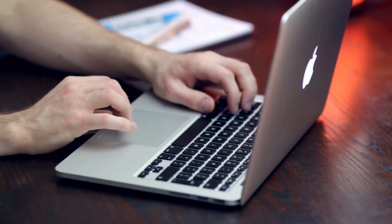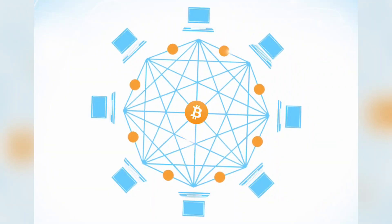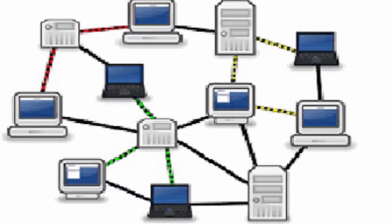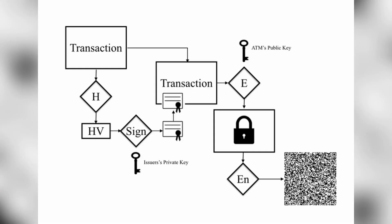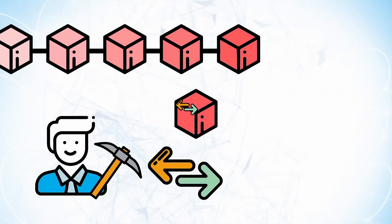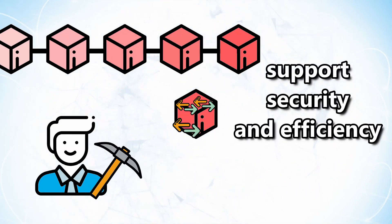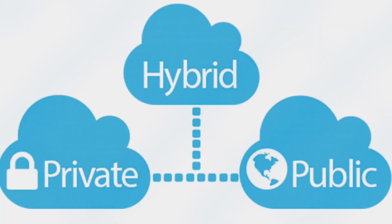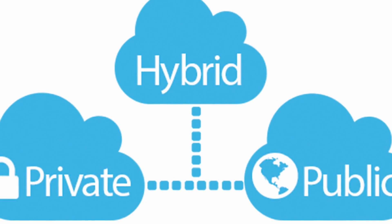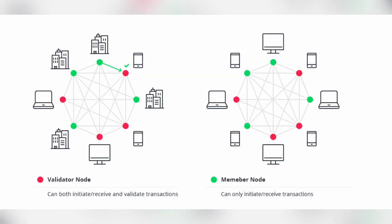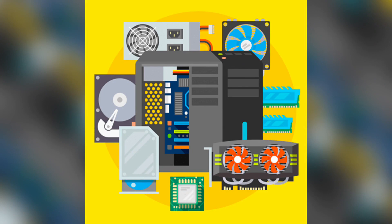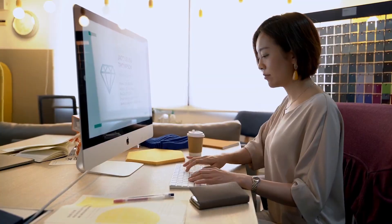Step 4: After choosing a blockchain platform, it is time to design the nodes. Suppose a blockchain is a wall — nodes are the bricks of this wall. A node is an interconnected device that supports a blockchain. It performs various tasks such as storing data, verifying transactions, and processing transactions. Your blockchain will depend on nodes for support, security, and efficiency. You will have to decide whether the nodes are going to be public, private, or hybrid.